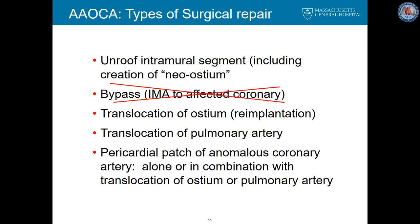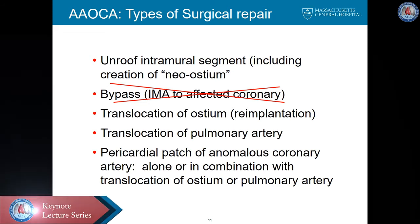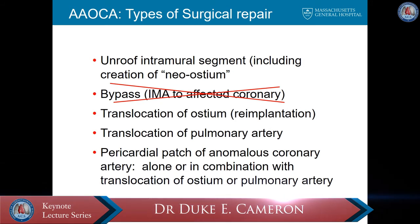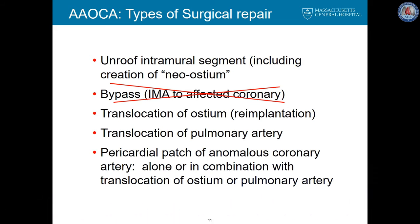There are many types of surgical repairs that have been described. The most common unroofs the intramural segment and creates a large neo-ostium. Years ago, simple coronary bypass using either a saphenous vein graft or an internal mammary artery was recommended for the affected artery. Unfortunately, many of these bypass grafts will eventually occlude because the anomalous coronary is not obstructed under non-stressed conditions, and competitive flow leads to closure of the bypass.